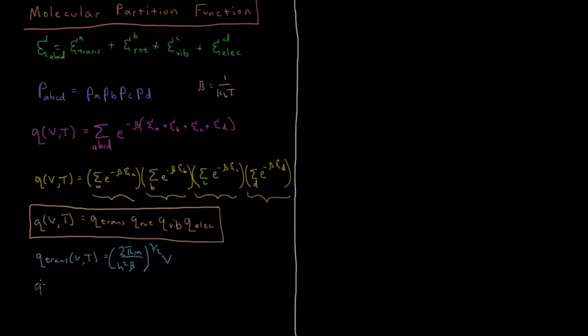For rotational energy, we have that q rotational of vt is going to equal product 8 pi squared times moment of inertia over h squared beta. If you want to know what moment of inertia is, look up some of my rigid rotor videos in the quantum mechanics playlist.